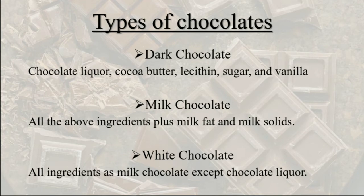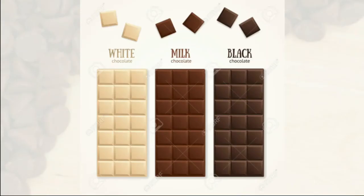The main ingredients in dark chocolate are chocolate liquor, cocoa butter, lecithin, sugar, and vanilla. Milk chocolate has all the same ingredients as dark chocolate but also includes milk fat and milk solids. White chocolate has all the ingredients of milk chocolate but does not have any chocolate liquor. The color difference between them is due to the presence of cocoa powder in dark chocolate.